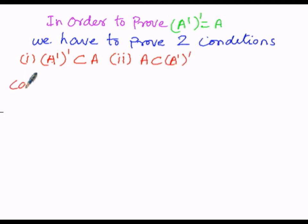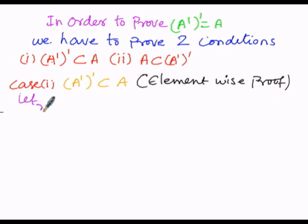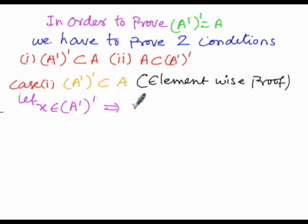In Case 1, we have to prove (A')' is a subset of A. Since we are proving it by element-wise method, we assume an element belonging to the LHS. Let x ∈ (A')'. That implies — when we remove the outer complement, x belonging to (A')' means x does not belong to A'. So x does not belong to A'.